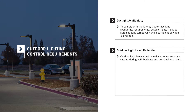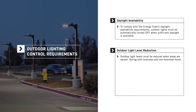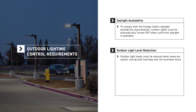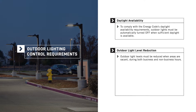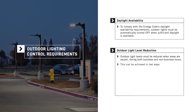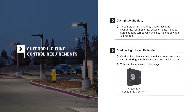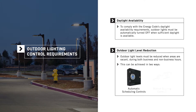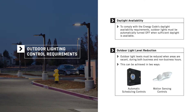The Energy Code also requires that outdoor light levels be reduced when areas are vacant during both business and non-business hours. This is achieved two ways: one, automatic scheduling controls, and two, motion sensing controls.